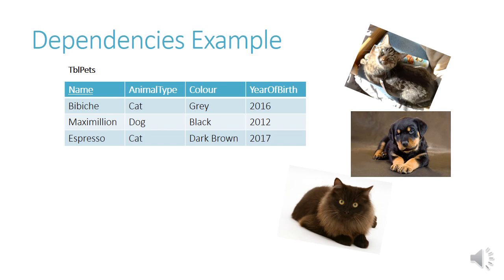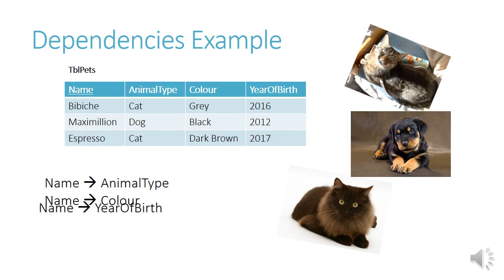Another dependencies example would be a pet table. We'd have the name of the pet, the animal type, the color, and the year of birth. So the name of the animal leads to the animal type — for example, Bibiche is a cat — and so the animal type is dependent on the name. Also the animal's color is dependent on the name, and the animal's year of birth is dependent on the name.